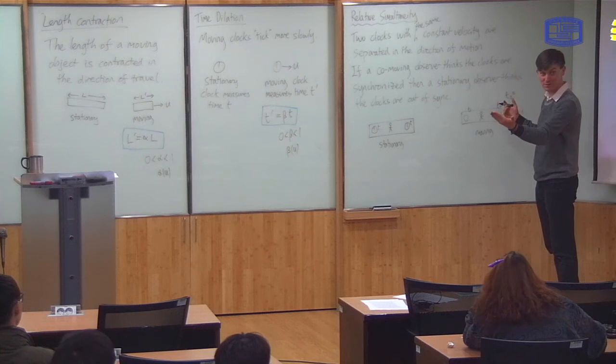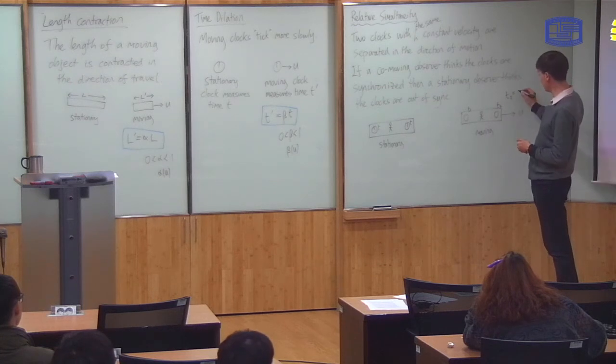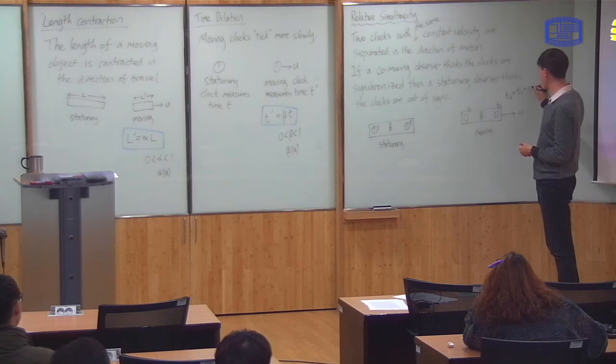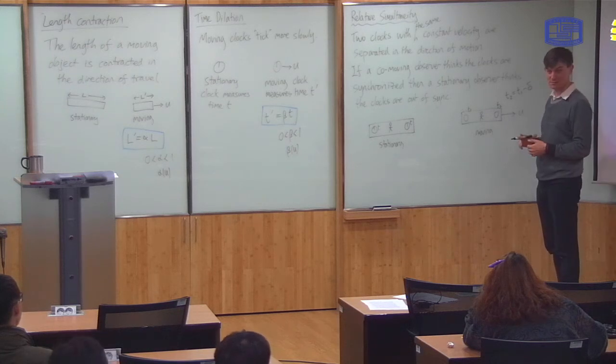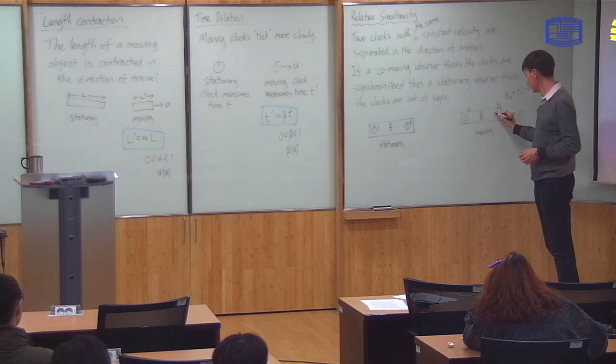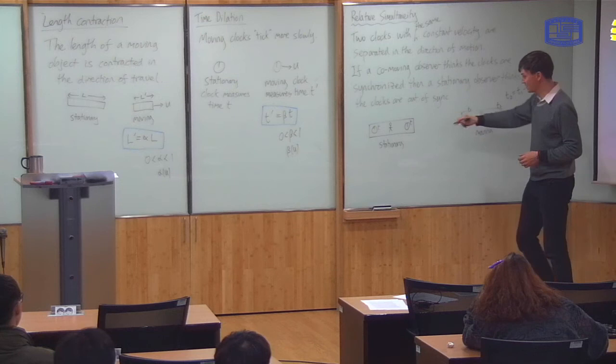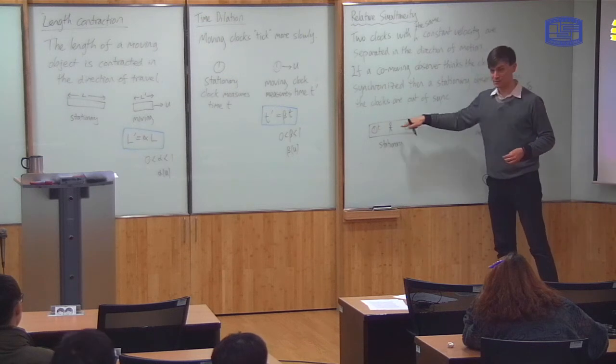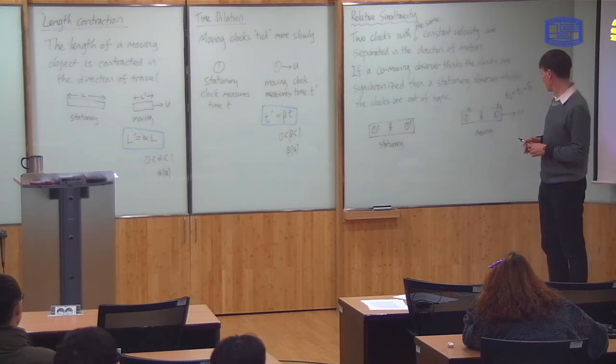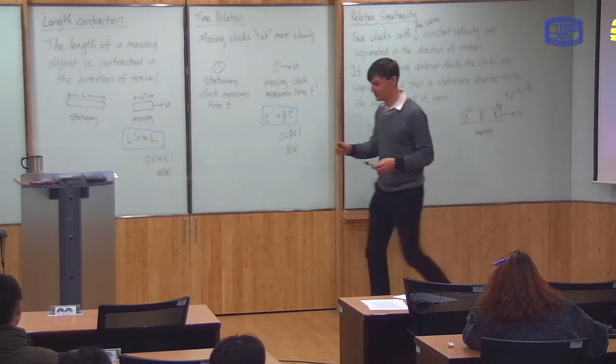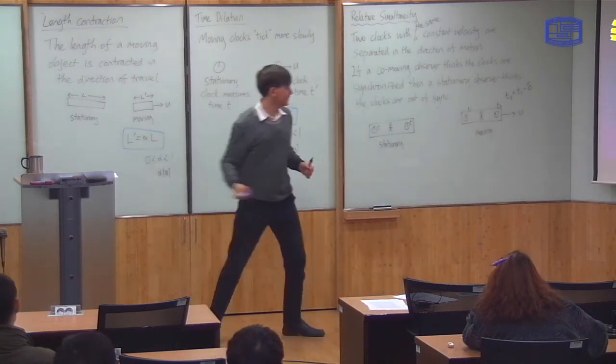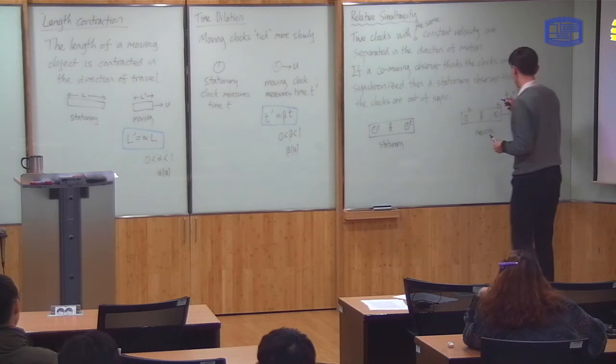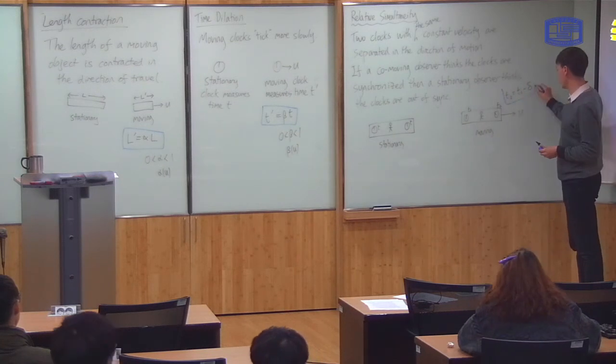He thinks if this one shows a time T1 and this one shows a time T2, then he thinks that T2 is behind T1, it shows less time than T1. So T2 is equal to T1 minus some amount which we'll call delta. So delta is the time difference between the two clocks here.